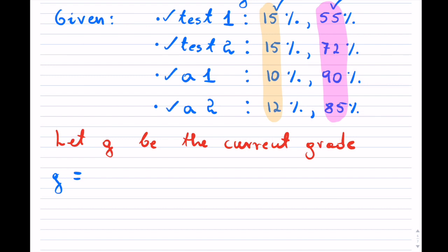So the tests and then assignments. So it is 15% times 55 plus, so that's test number two. Again, 15% times 72 plus the first assignment, 10% times 90 plus 12% times 85.